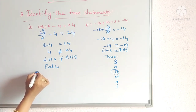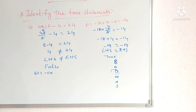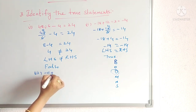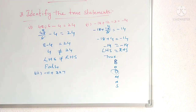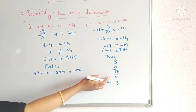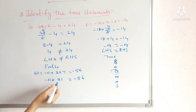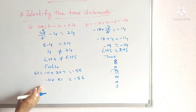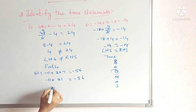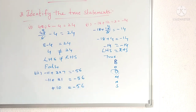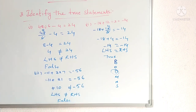Third statement: −11 + 3 × 7 = 56 − 56. Multiplication and addition: first multiplication, 3 × 7 = 21. Then −11 + 21: subtract small from big, 21 − 11 = 10, and before the big number is plus, so +10. RHS = 56 − 56 = 0. LHS = 10 ≠ 0, so LHS ≠ RHS. This is FALSE.